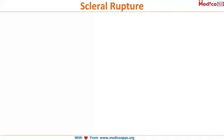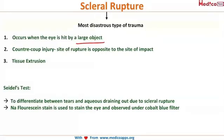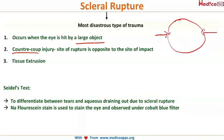Scleral rupture, which can sometimes be hidden underneath subconjunctival hemorrhage, is the most disastrous type of trauma. It occurs when the eye is hit by a large object. It is a countercoup injury — when you apply pressure at one side, the impact occurs at the opposite side. After the rupture occurs, there is tissue extrusion through the ruptured sclera.